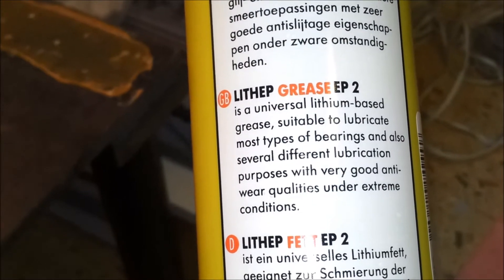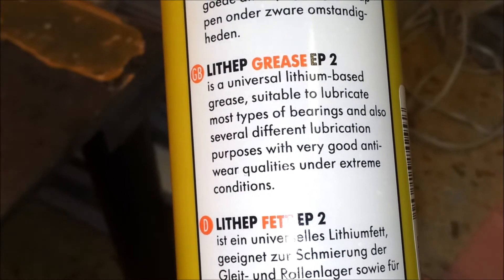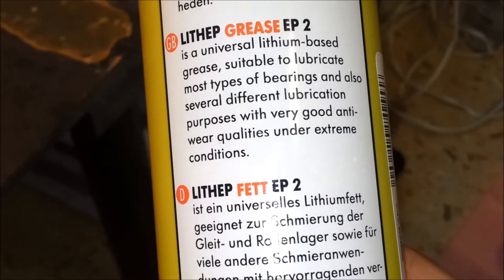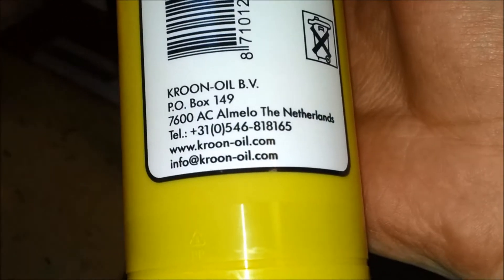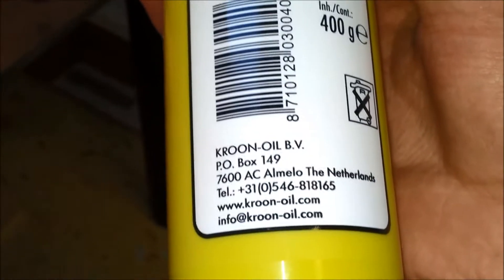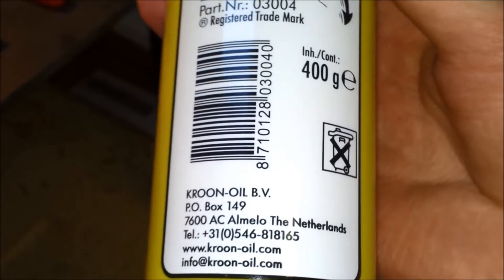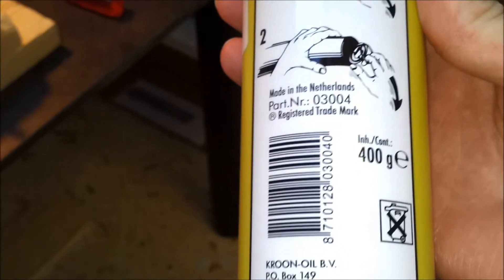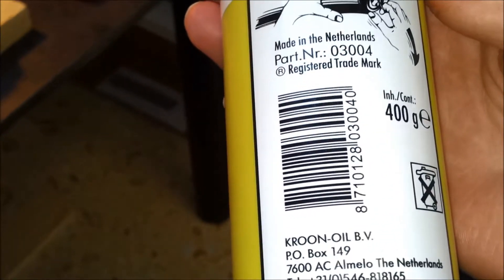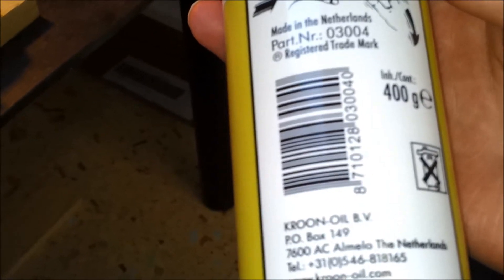Let me look at the English. Part universal lithium based grease. Suitable to lubricate most types of bearings and also several different lubrication purposes with very good wear qualities under extreme conditions. Litap grease EP2. Here are some instructions and specifications. This is a Dutch brand. The company is in my local area as a matter of fact. It's not too far away from where I live. I bought it at an automotive supply store that's close to my work, almost on the other side of the street. And they only had this stuff.